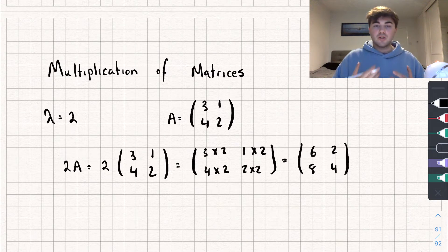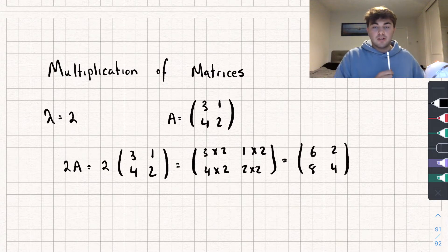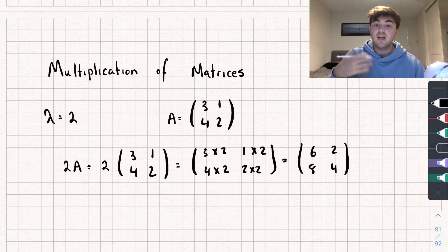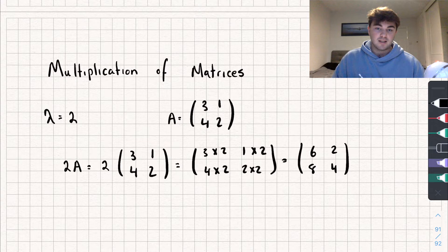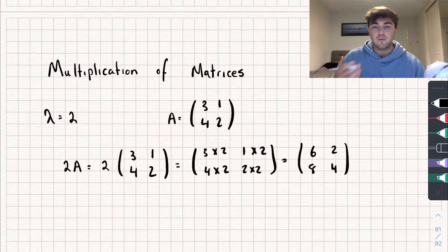The resulting matrix is still a 2 by 2, so the dimension of the matrix doesn't change under scalar multiplication — it stays exactly the same. And we'd work the exact same way if it was a fraction or a negative; you're just going to multiply each element of the matrix by the scalar.